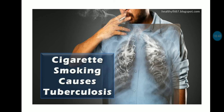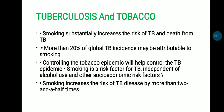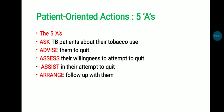Cigarette smoking causes tuberculosis. Tobacco has a most vital role in tuberculosis. Smoking substantially increases the risk of TB and death from TB. More than 20% of global TB incidences may be attributed to smoking. Controlling the tobacco epidemic will help control TB. Smoking is a risk factor for TB, independent of alcohol use and other socioeconomic risk factors, and increases the risk of TB disease by more than two and a half times.